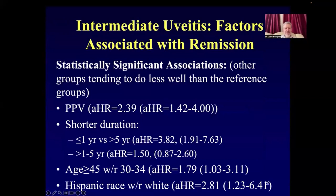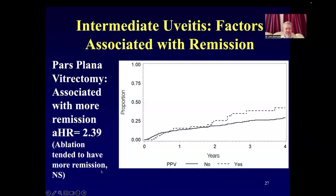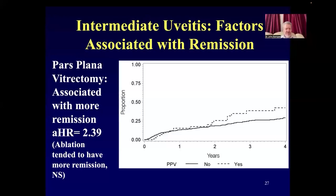Risk factors for remission included pars plana vitrectomy, which was quite interesting, shorter duration of disease, and older age. The Kaplan-Meier curve for pars plana vitrectomy versus no vitrectomy showed separation that was late and did not reach 50%, though these cases were likely more severe. Further work about vitrectomy's role in inducing remission is needed.